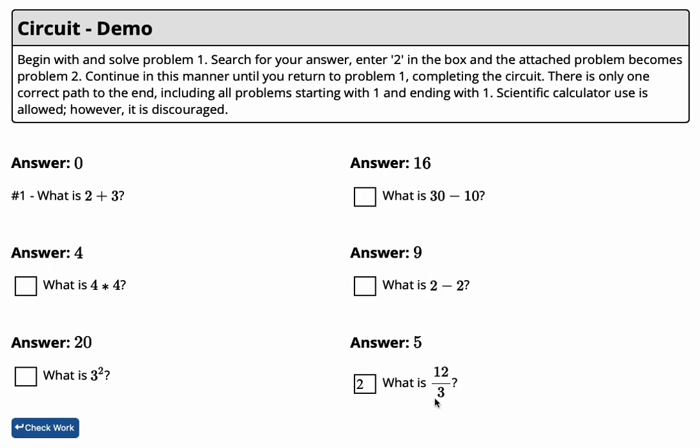Next, we answer this problem. What is 12 over 3? Well, that's 4, so we search again for our answer. This then becomes the next question in our circuit, problem 3.